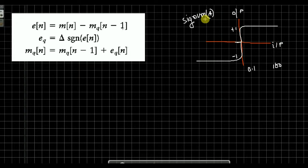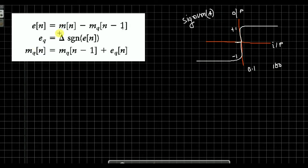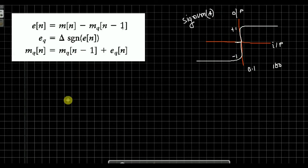If the signum function input is a negative value, the output is always negative 1, that is minus 1. So positive input gives plus 1, and negative input gives minus 1 from the signum function. We can use this signum function — it changes output to plus 1 or minus 1.